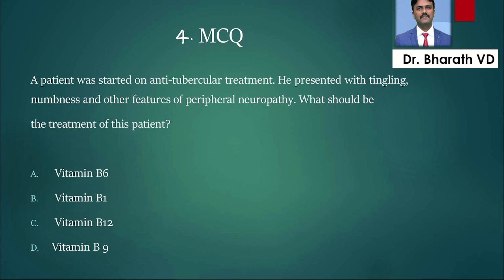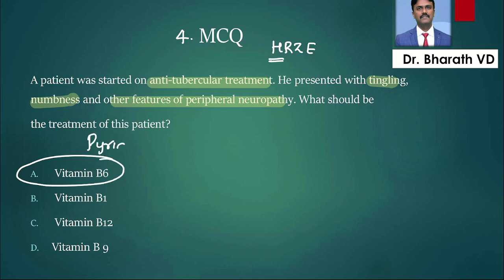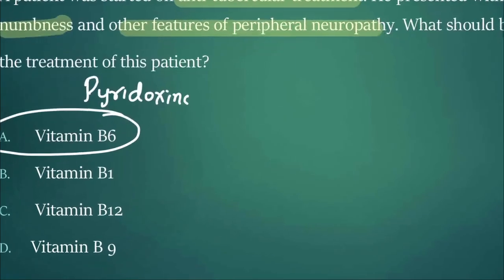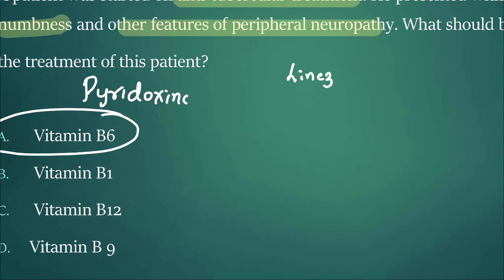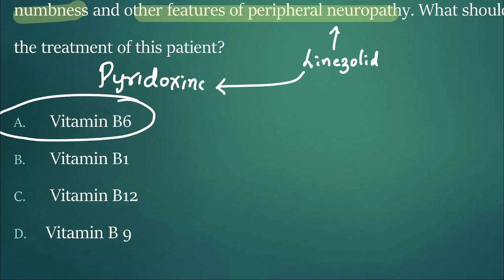The patient was started on anti-TB drug. He presented with tingling and numbness and other features of peripheral neuropathy. What should be the treatment? Anti-TB drugs first-line are HRZE. In that, H - isoniazid - can cause peripheral neuropathy. The treatment we use is B6. B6 stands for pyridoxine. Nevertheless, what is also given in TB is linezolid. Linezolid is also used for drug-resistant TB, and that can also lead to peripheral neuropathy. How do we manage that? For that also we use pyridoxine.